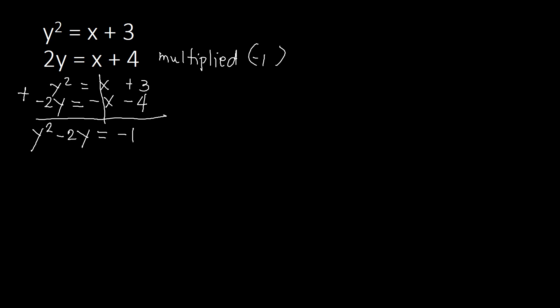We can now move negative 1 to the other side because this is quadratic in nature. The highest exponent is 2, which tells us this is quadratic. We move everything to the left side and set the right side equal to zero. Adding 1 to both sides, we get y squared minus 2y plus 1 equal to 0.